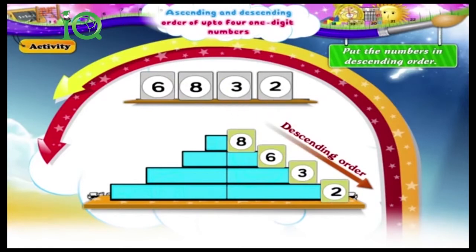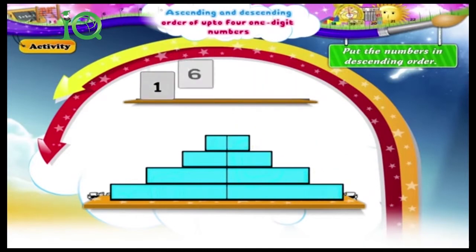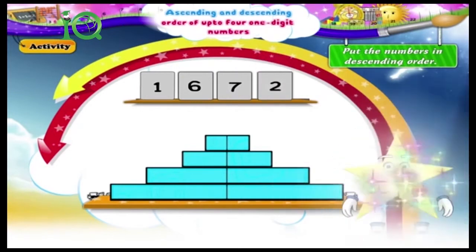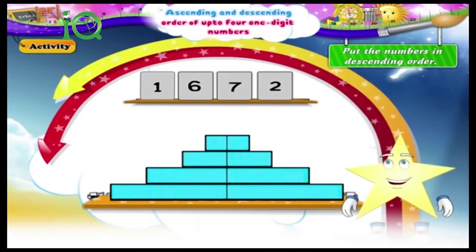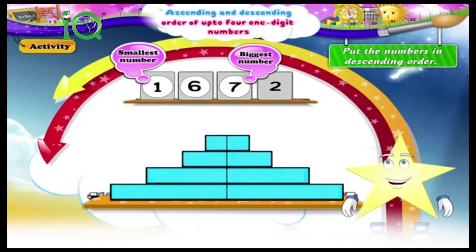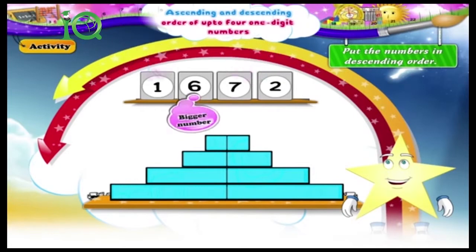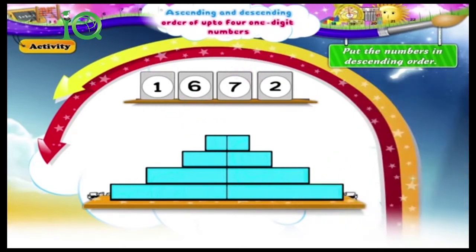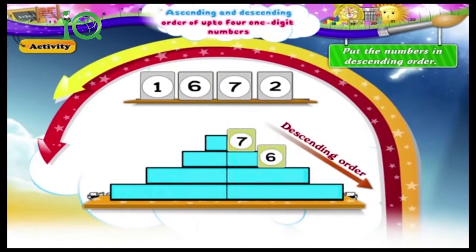Finally, the numbers one, six, seven, two. The biggest number is seven. The smallest number is one. Between six and two, six is the bigger number. The numbers arranged in descending order are seven, six, two, one.